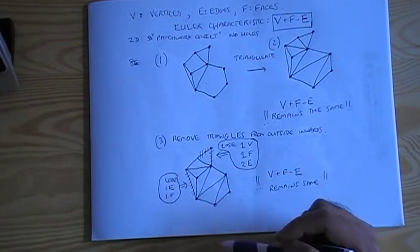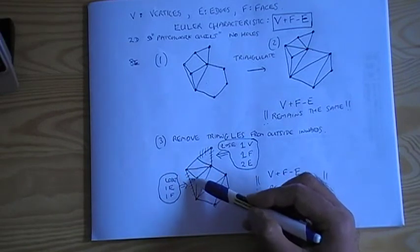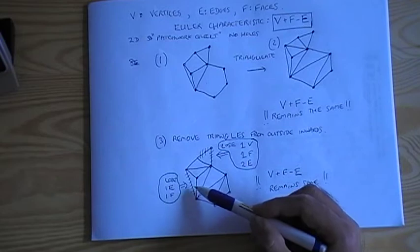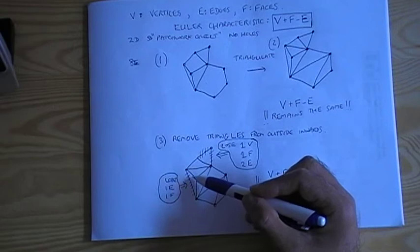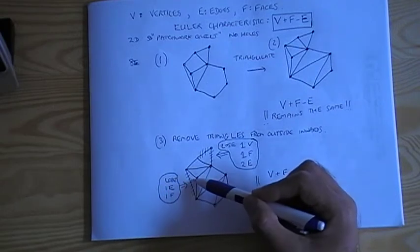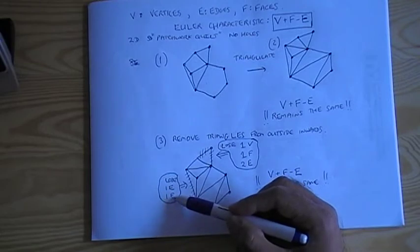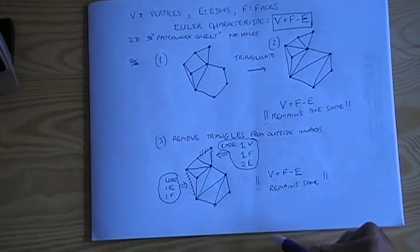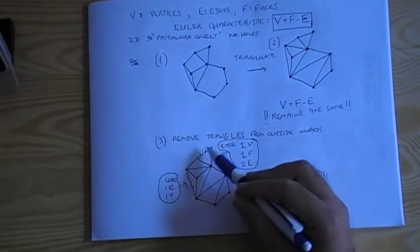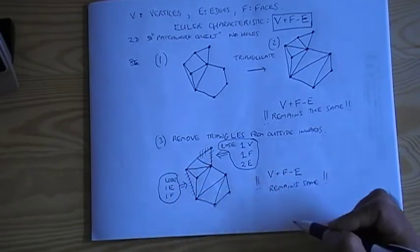But of course, this is not the only type of triangle that you could remove. You could also imagine removing this triangle here. And to remove this triangle, you actually need to knock off only one edge, not two. But in losing that edge, you also lose the face. So edges go down by one, and faces go down by one. And so indeed, again, V plus F minus E remains the same. So if you think about it, you'll see that whatever way you pull off triangles from the edge of the shape, this quantity will remain the same.